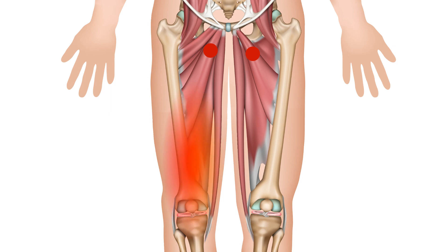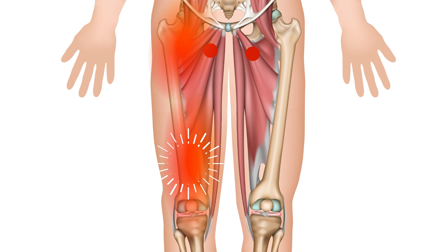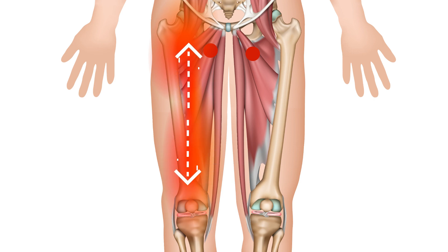The second place that these triggers refer pain to is down in the lower leg, and often there's a little join between them. This pattern is also very similar to the pain that you get from osteoarthritis of the hip. I'll see you next time.